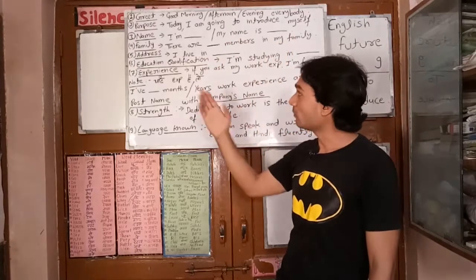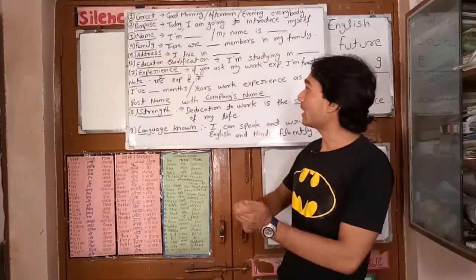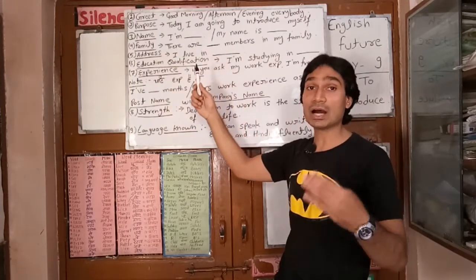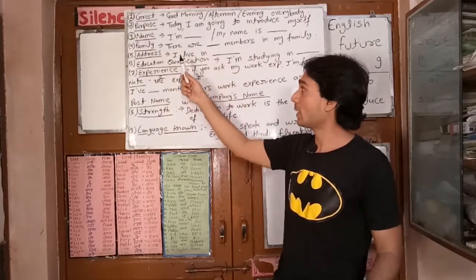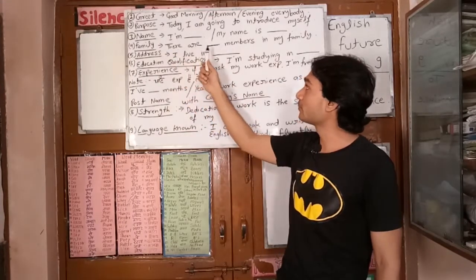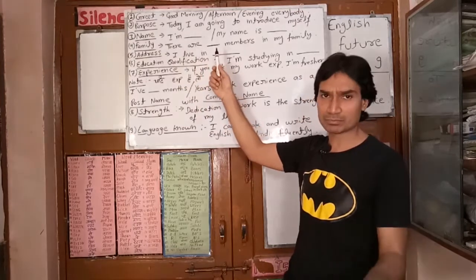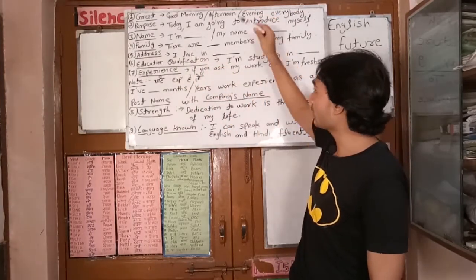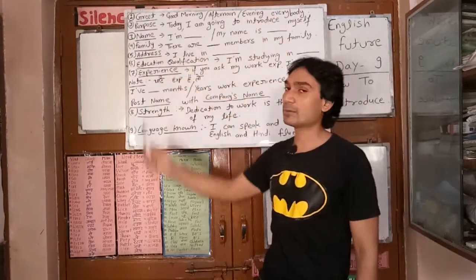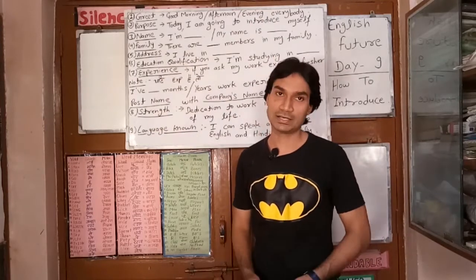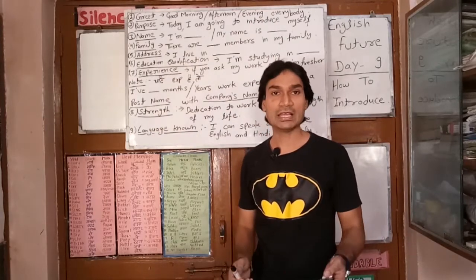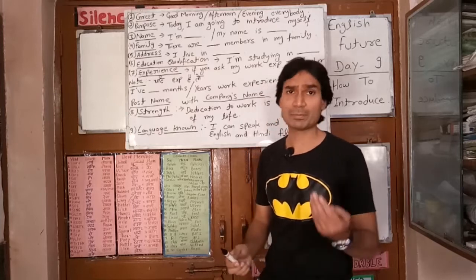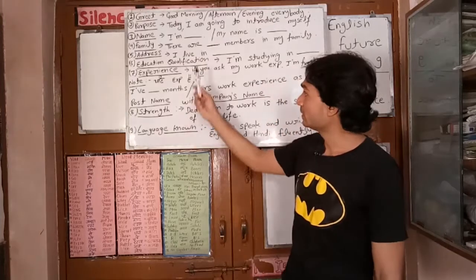The fourth point is family. How many people are in your family? You will say: there are 6 members or 5 members in my family. After that, you will tell your address. For example, I live in Delhi or I live in Noida.